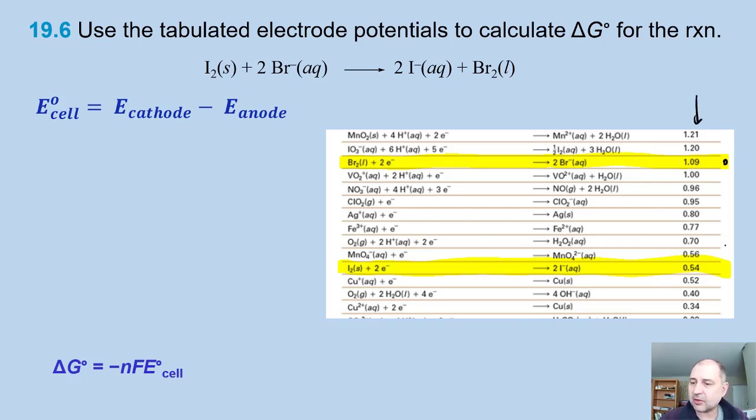We're going to use the tabulated values, and I snipped and zoomed and highlighted the oxidation and reduction, and of course they're both listed as reductions. We want ΔG, so we have to use the equation we just looked at, but before we can do that we have to calculate the electron potential. How do we do that? Well we're experts. We first determine what's the oxidation, what's the reduction here.